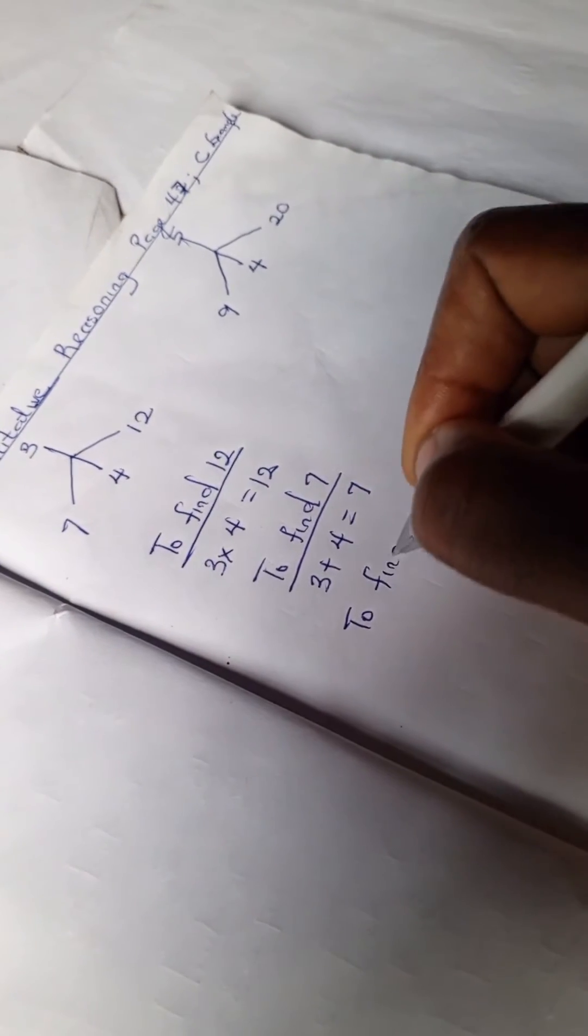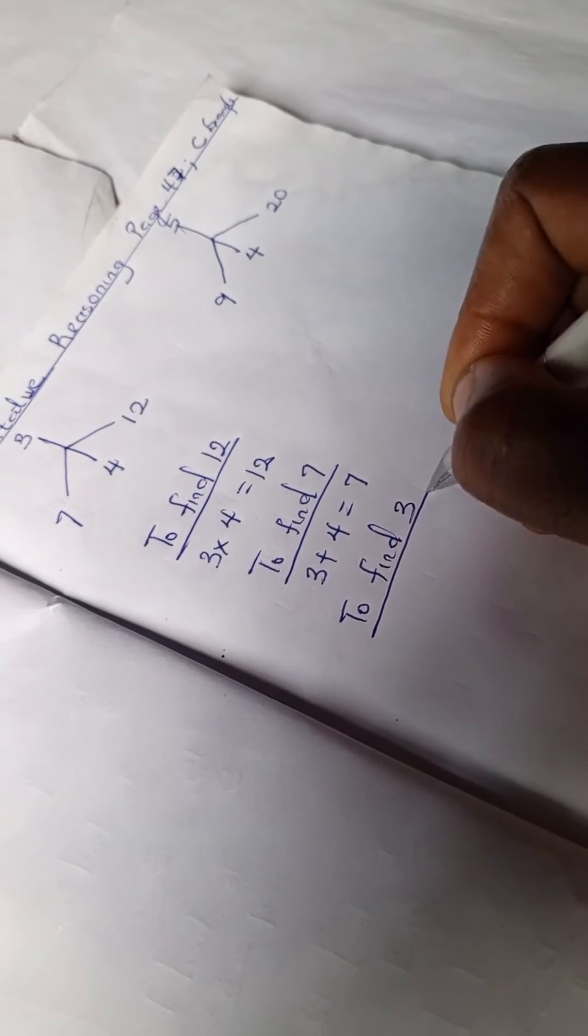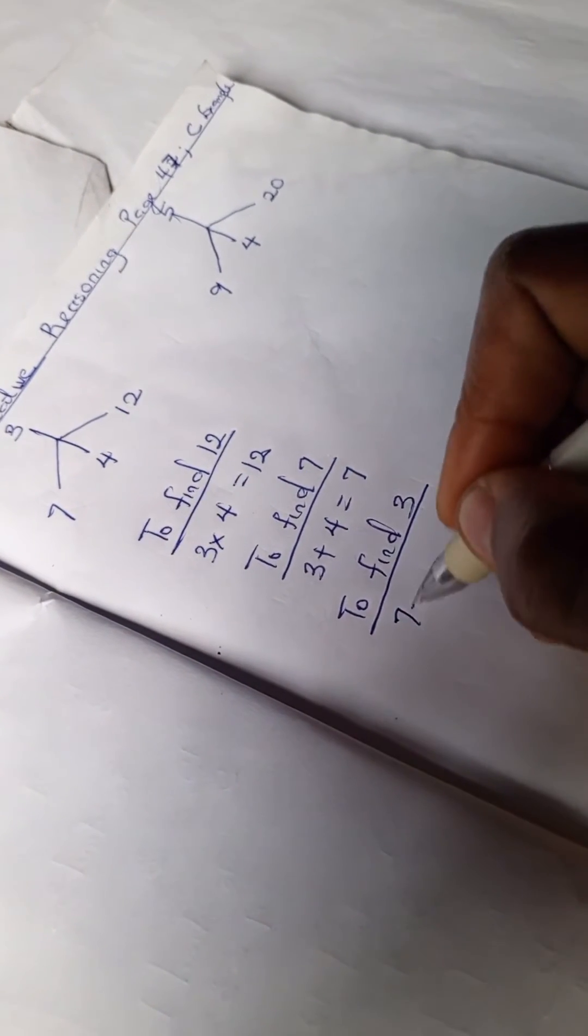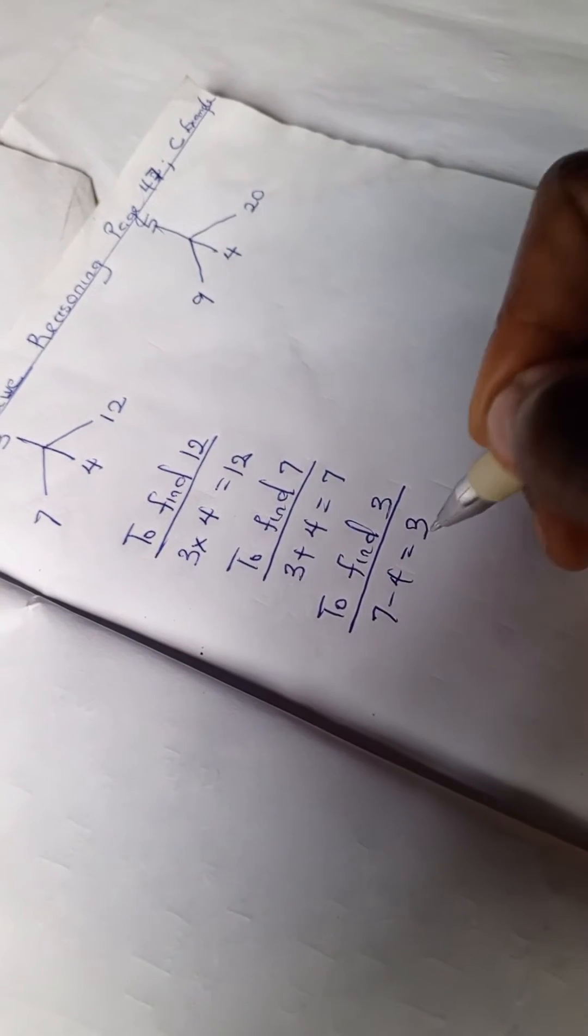We can just do the reverse of them all. To find 3 we have 7 minus 4 is 3.